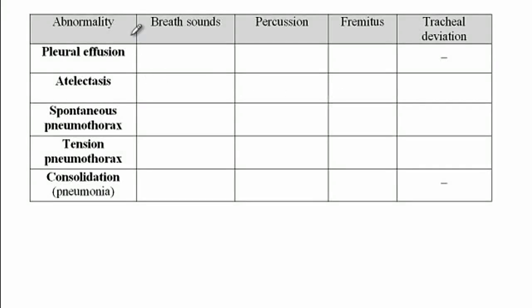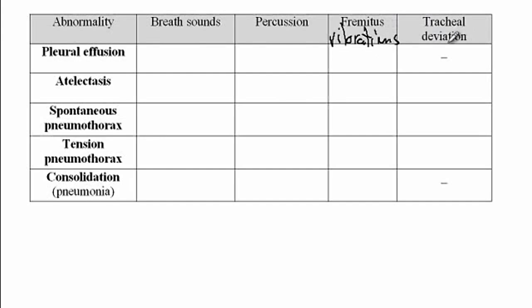In this video, I will discuss how lung lesions affect breath sounds on auscultation, how they affect percussion sounds — whether dull or hyper-resonant — how they affect the transmission of vibrations through the lungs, which is also called fremitus. You perform this test by placing the ulnar side of your hands on the patient's back and asking them to repeat the number 99 to feel the vibrations. And finally, whether the trachea will deviate towards or away from the lesions.